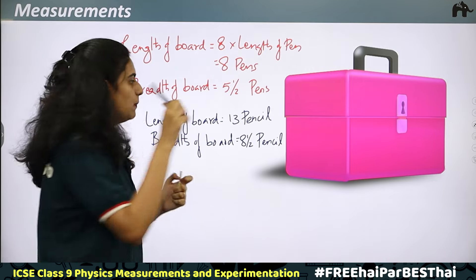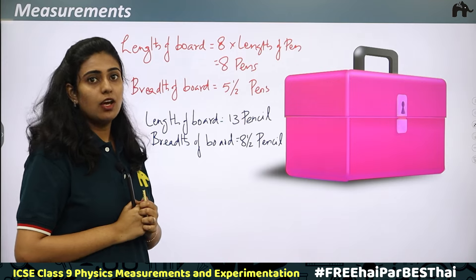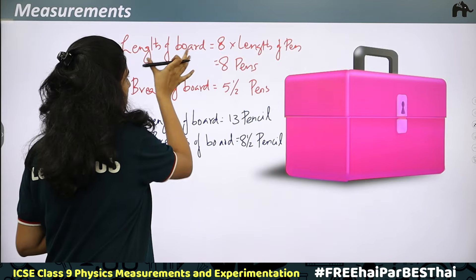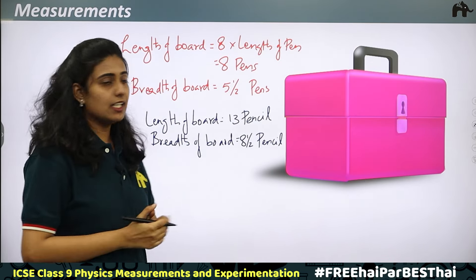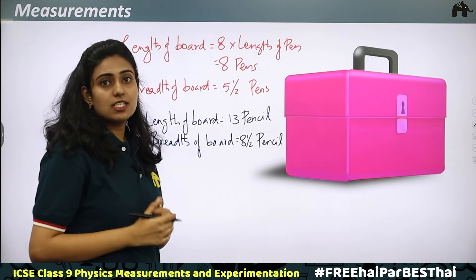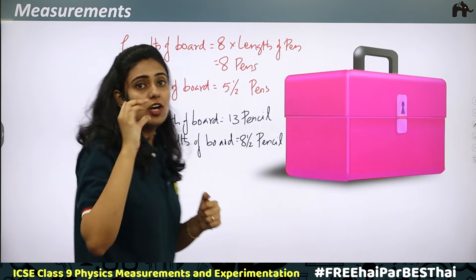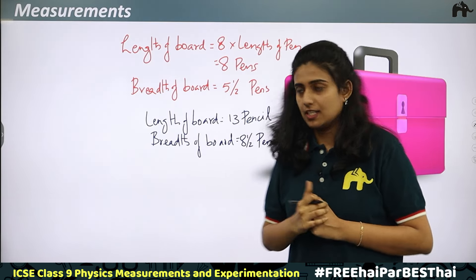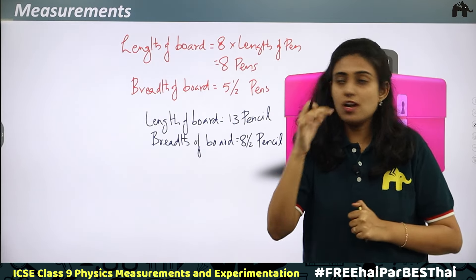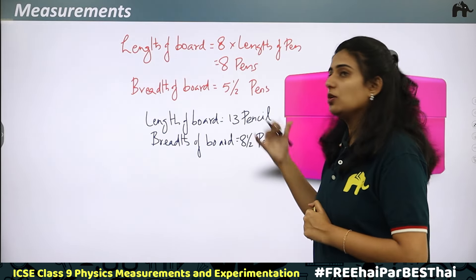So from this, what do you understand? Can this pen or pencil be used as a standard? Can it be universally accepted? No. Because when the object changes, the value we get also changes. These cannot be used as standard units. Also, if you sharpen the pencil the next day, its size decreases, so you need more pencils - perhaps 15 or 17 - to measure the same length. The number keeps changing, so these cannot be universally accepted.